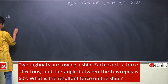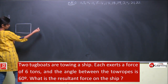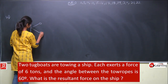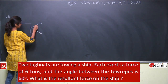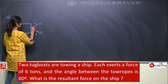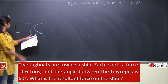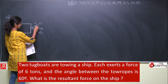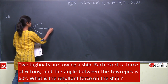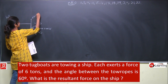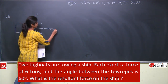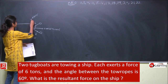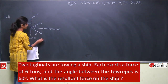So this is the ship and 2 small boats are pulling it. Each boat applies a force of 6 tons and the angle between them is 60 degrees. We need to find the resultant force. Each force makes 30 degrees with the horizontal, so we have 6 cos 30° horizontal and 6 sin 30° vertical components. The vertical components cancel out and the horizontal components add up.